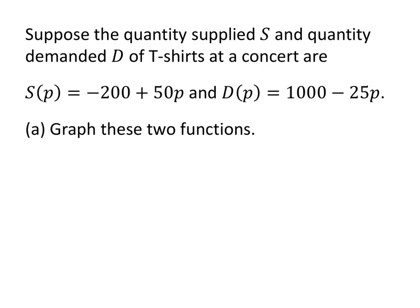So let's suppose that the quantity supplied and quantity demanded of t-shirts at a concert are given by these two formulas. First let's graph these functions just to get an idea of what this looks like. So here's my x-axis and my y-axis. In this case, my x-axis is price and my y-axis is quantity. Now we're going to graph the quantity supplied and the quantity demanded on the same graph, so we'll just call that quantity.